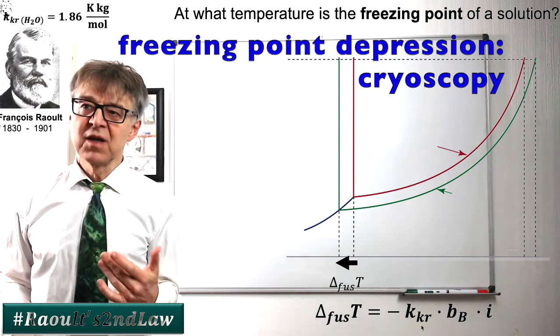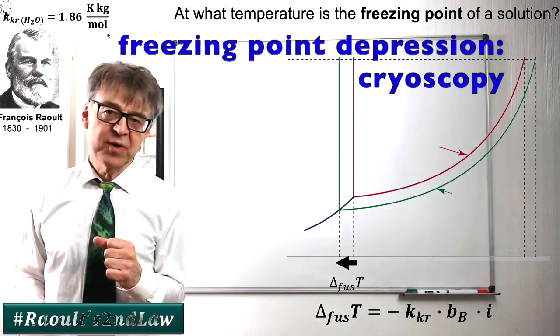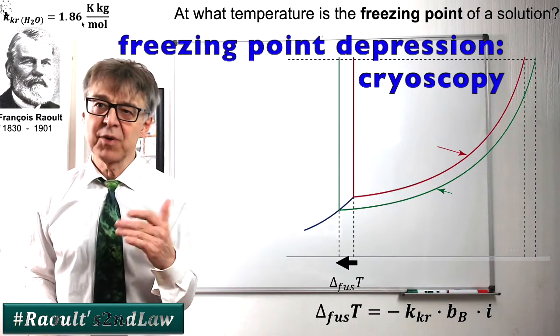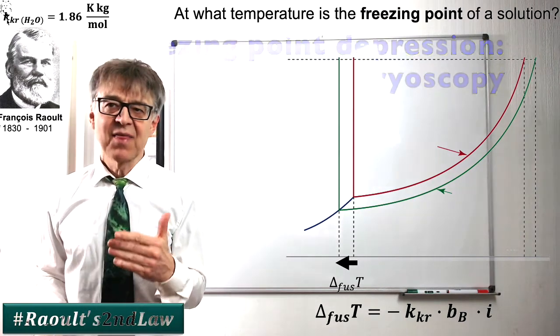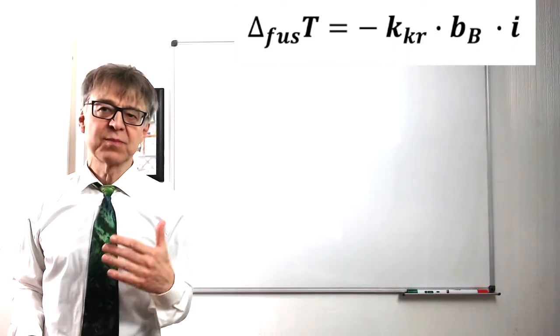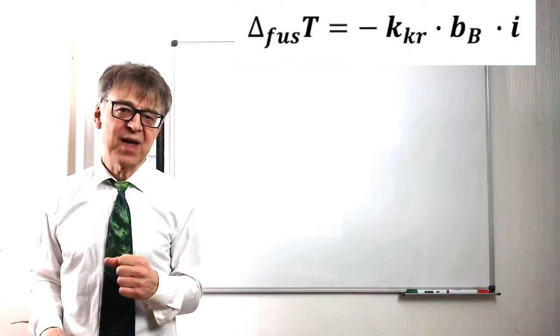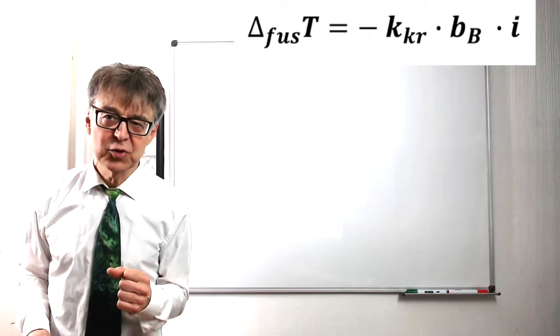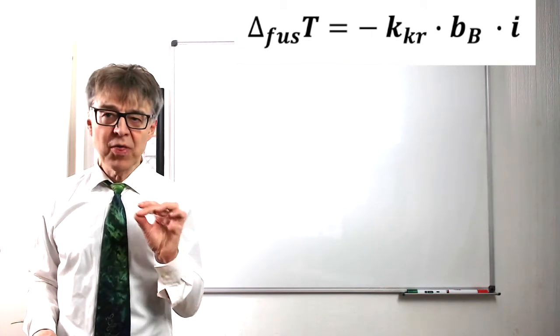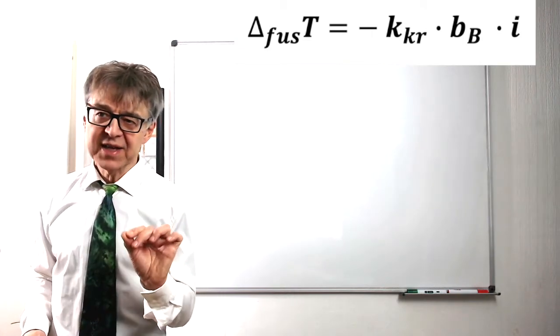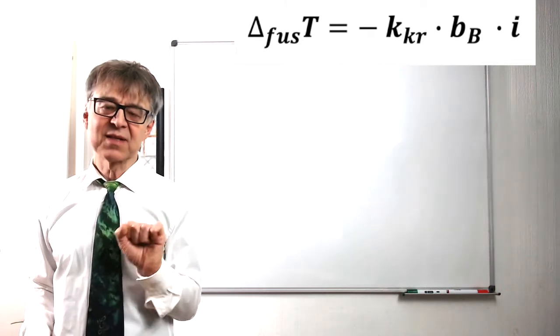For water, the cryoscopic constant is 1.86 kg per mole. This means that any solution with osmolality 1, like the isotonic sugar and salt solution in our examples, both freeze at negative 1.86 degrees centigrade.